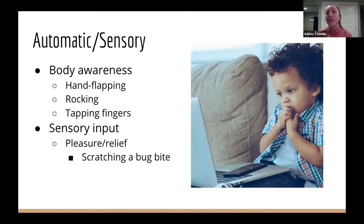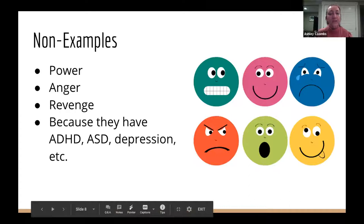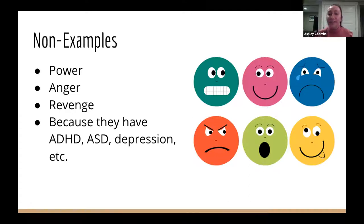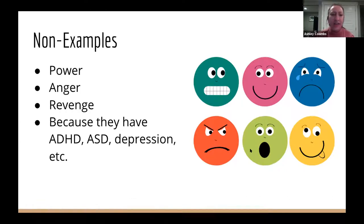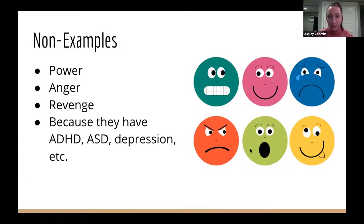Those are our three functions of behavior — what motivates behavior. Things we might think are behavior functions but really aren't include: feeling in control, feeling powerful, feeling angry, or having autism, ADHD, or depression. All of these are things we can't see. They may be factors in what we're feeling, but they're not the behavior itself because they aren't observable or measurable.